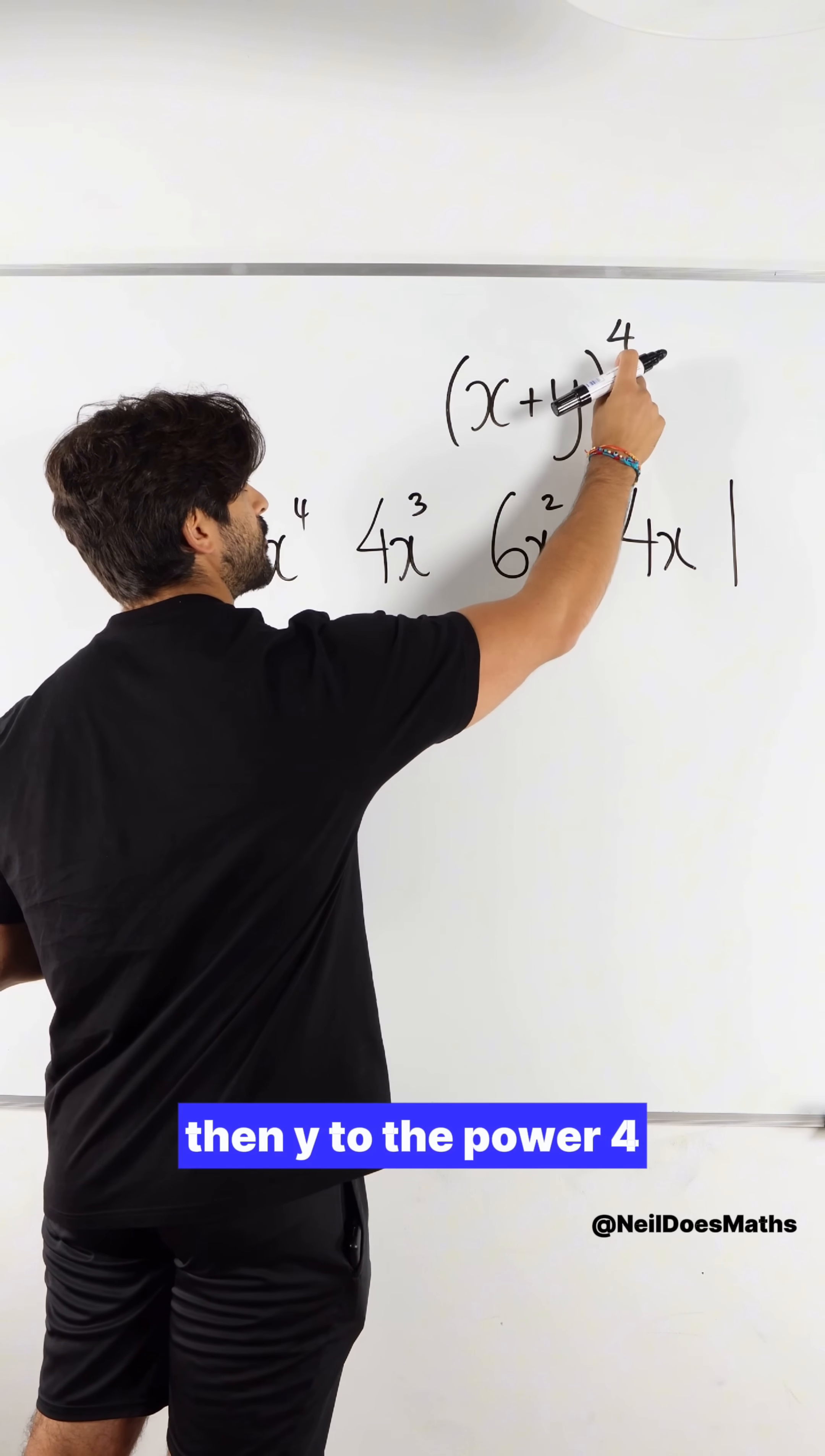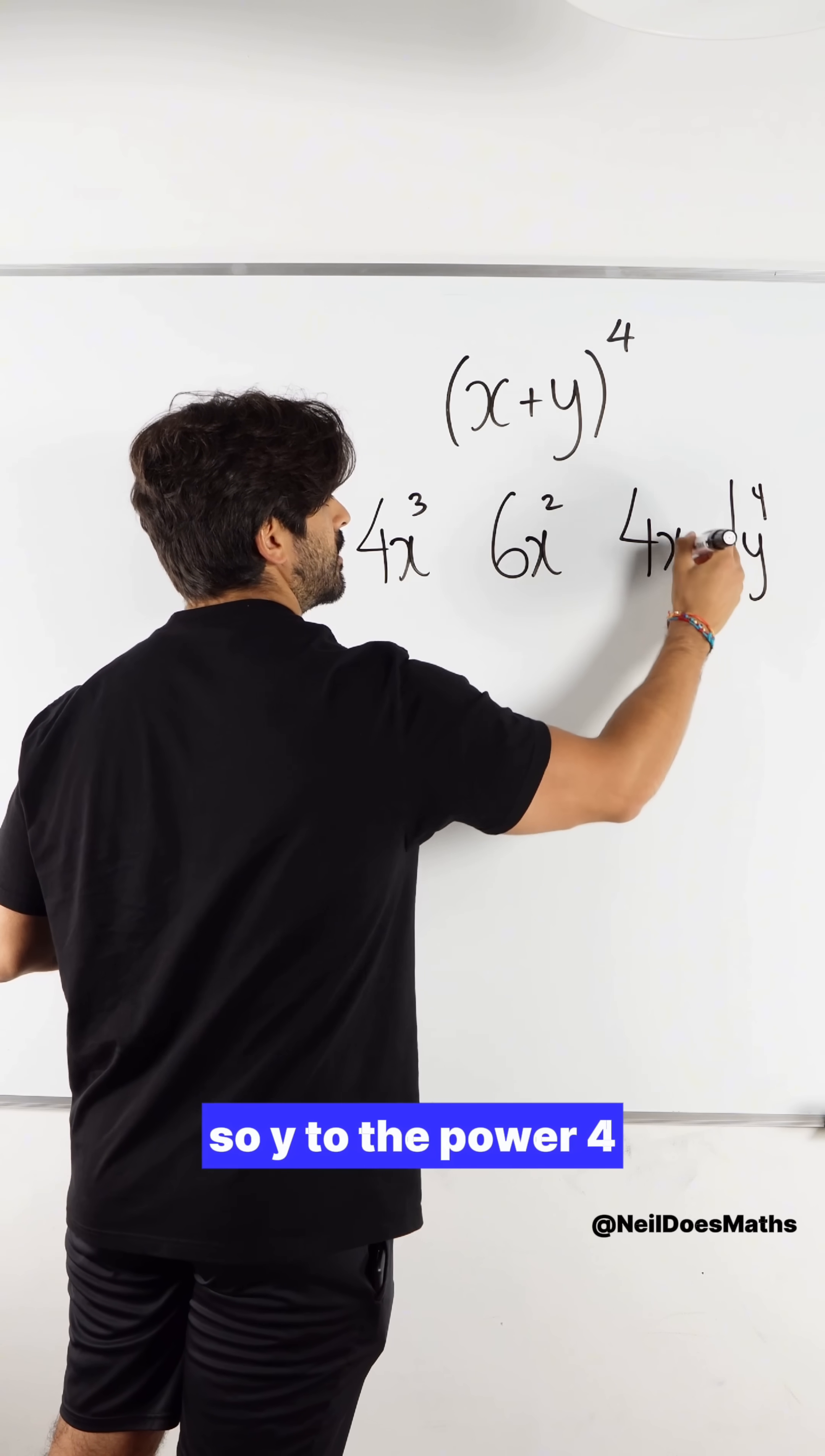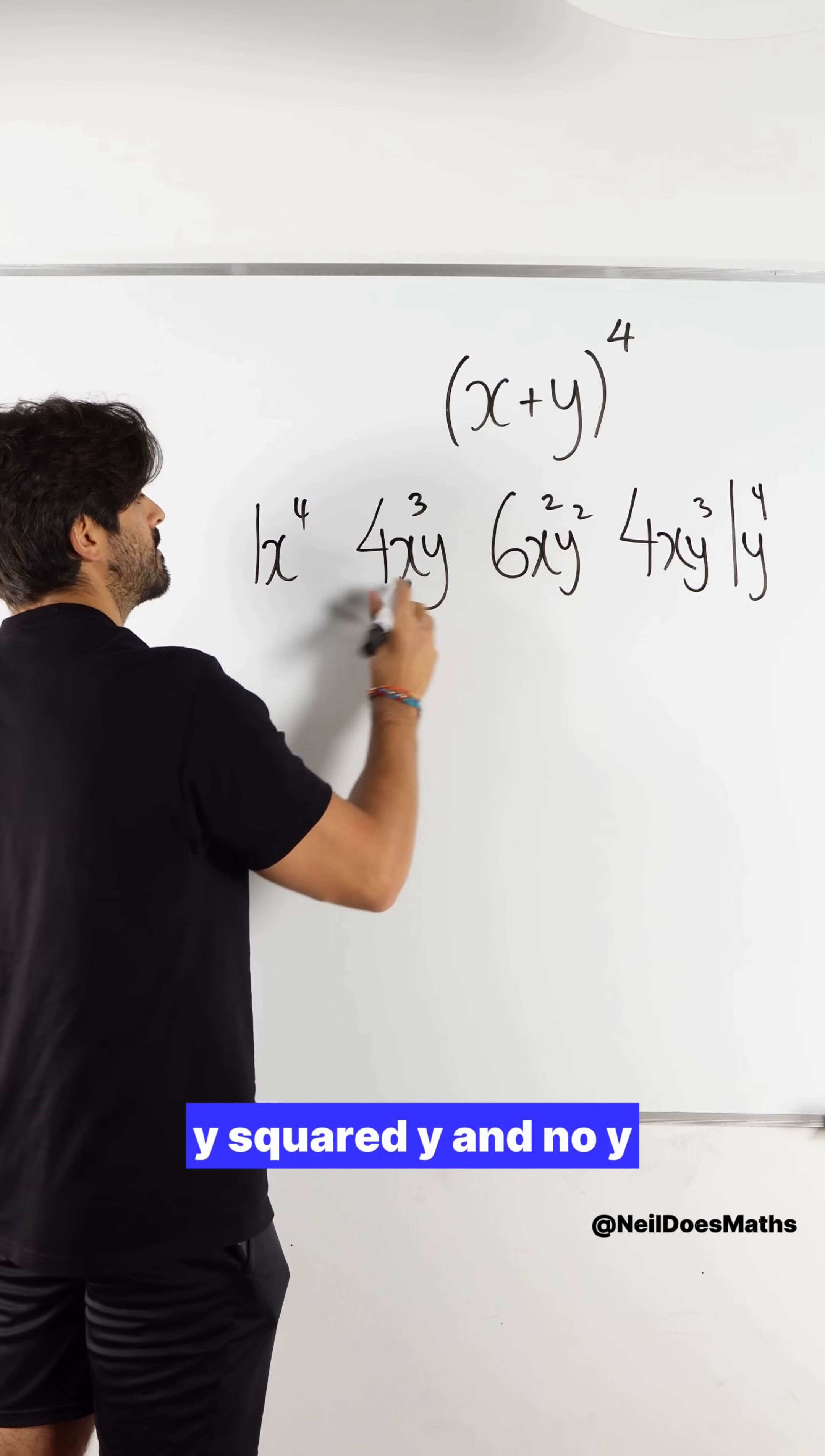Then y to the power of 4 will decrease the other way. So y to the power of 4, y cubed, y squared, y, and no y.